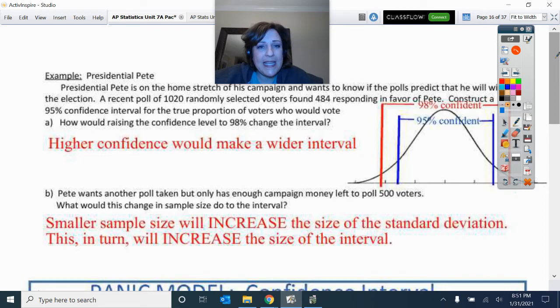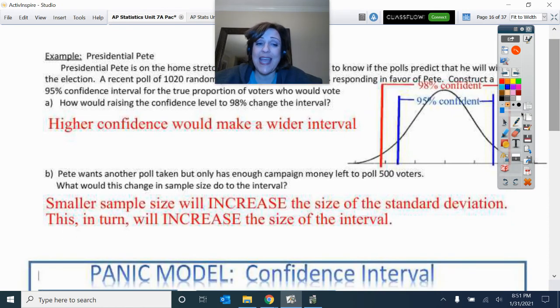Now here we have this problem. We have Presidential Pete. He's on the homestretch of the campaign, and he wants to know if the polls predict that he will win the election. So a recent poll of 1,020 randomly selected voters found 484 responded in favor of Pete. Construct a 95% confidence interval. Now we're going to do that here in just a minute. But how would raising this confidence level, what would that do to the interval? So just real quick, going from 95% to 98% would make that a wider interval. But what happens if Pete wants to take another poll, but he doesn't have enough money to poll as many people? So he only polls 500 voters. What's that going to do if we have to have a smaller sample size? That increases the standard deviation, which then makes the interval bigger. So he can be less precise.